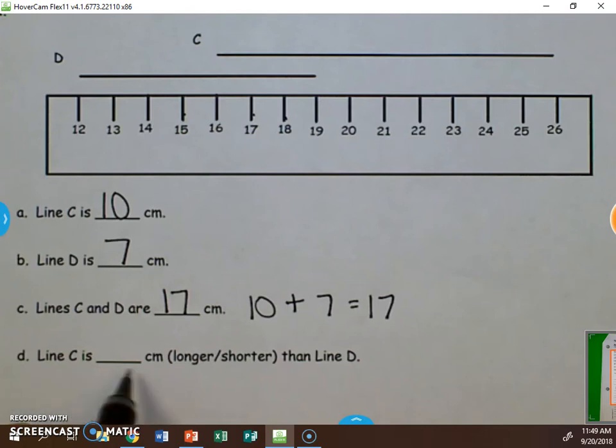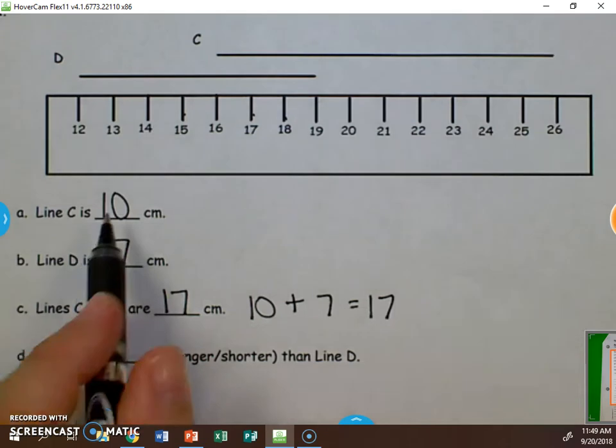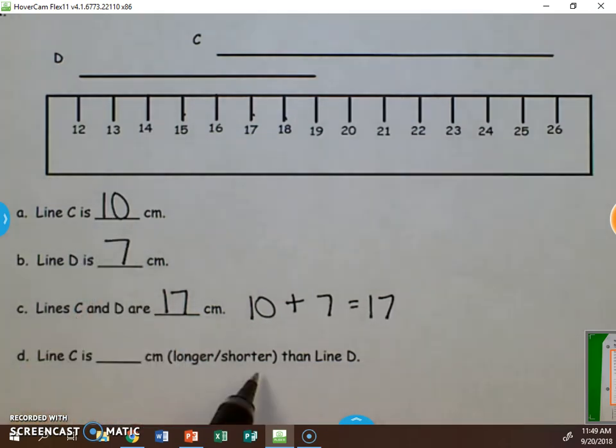Line C is blank centimeters longer, shorter than line D. So we look at C. C is 10. D is 7. Is 10 going to be longer or shorter? Well, it's going to be longer because it's a bigger number.